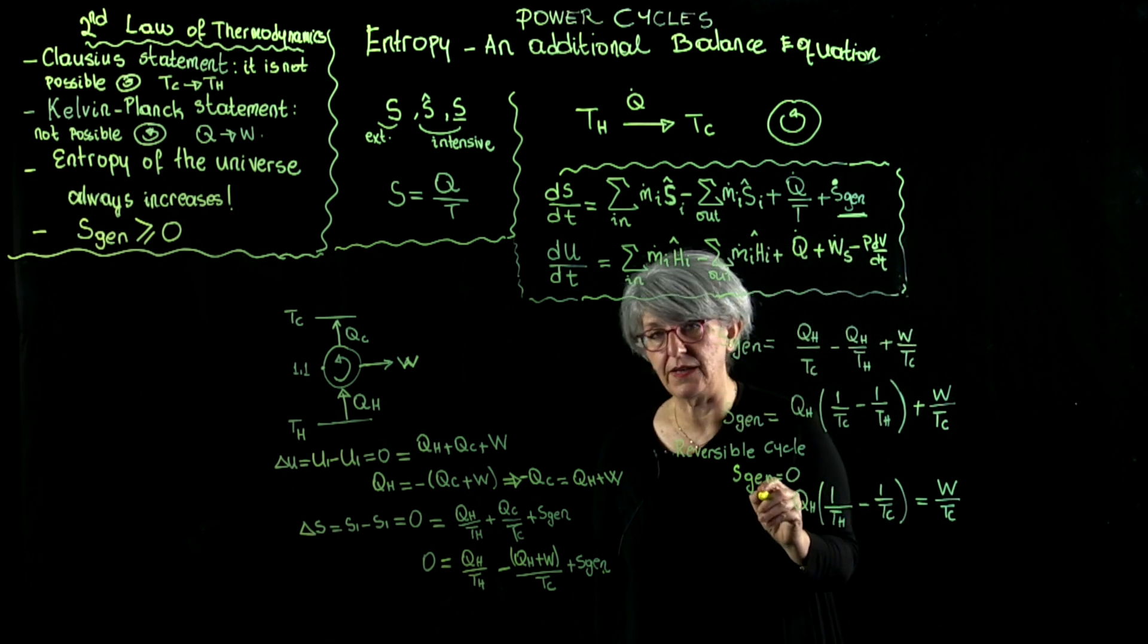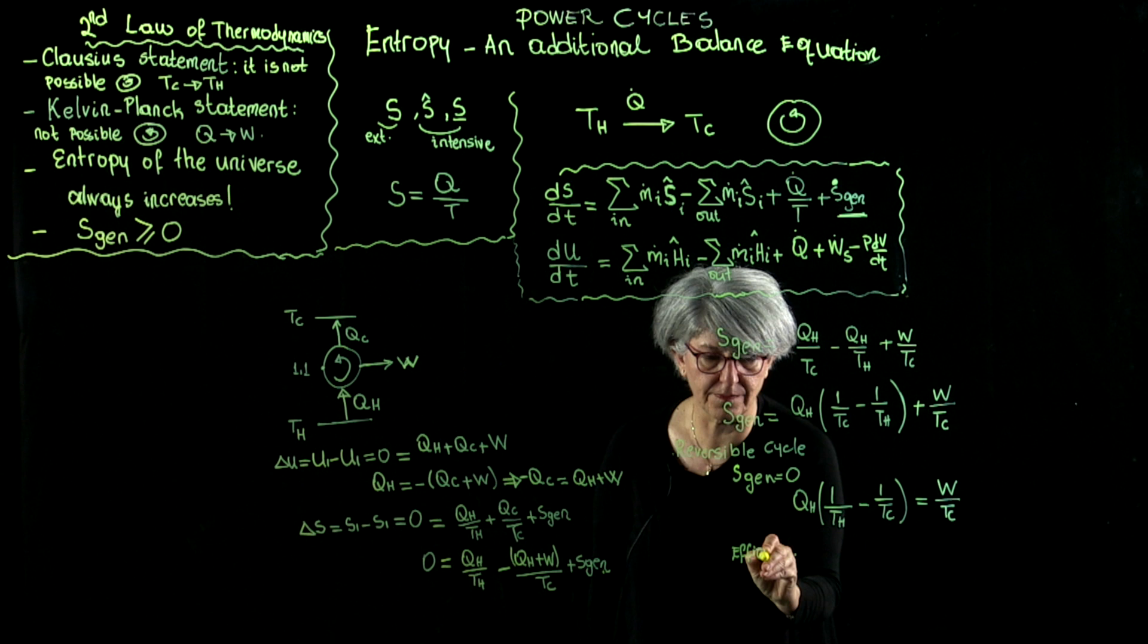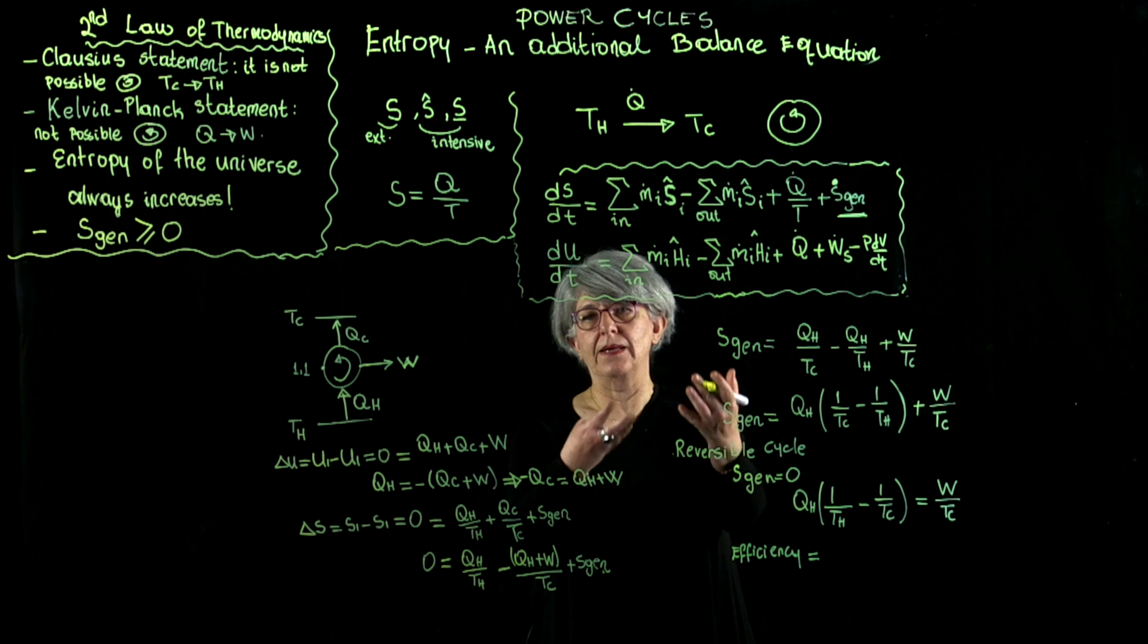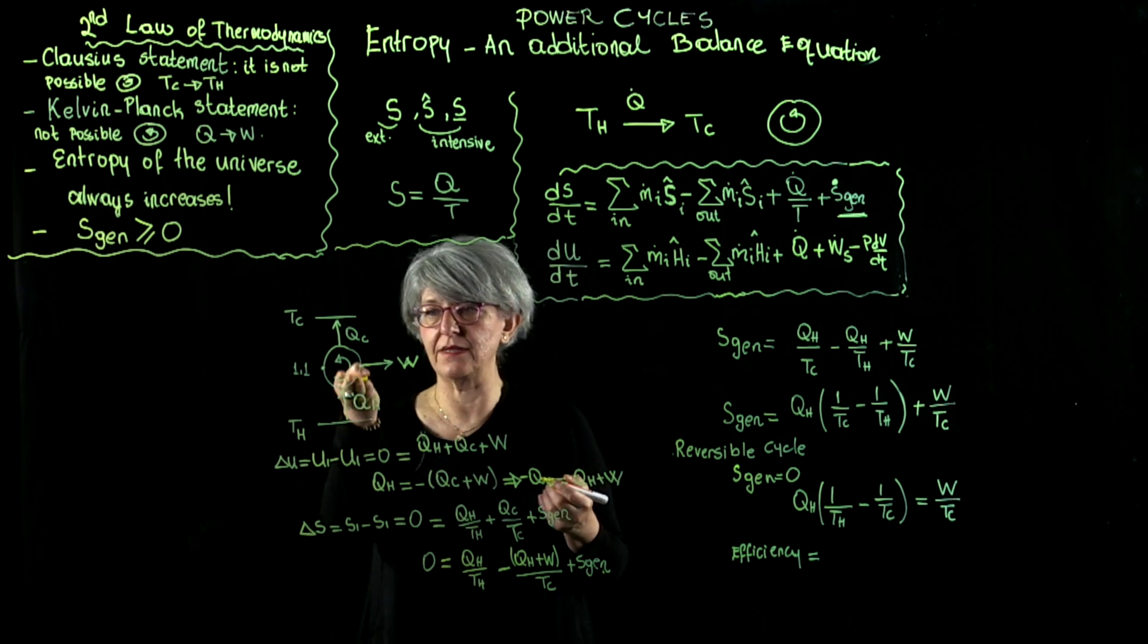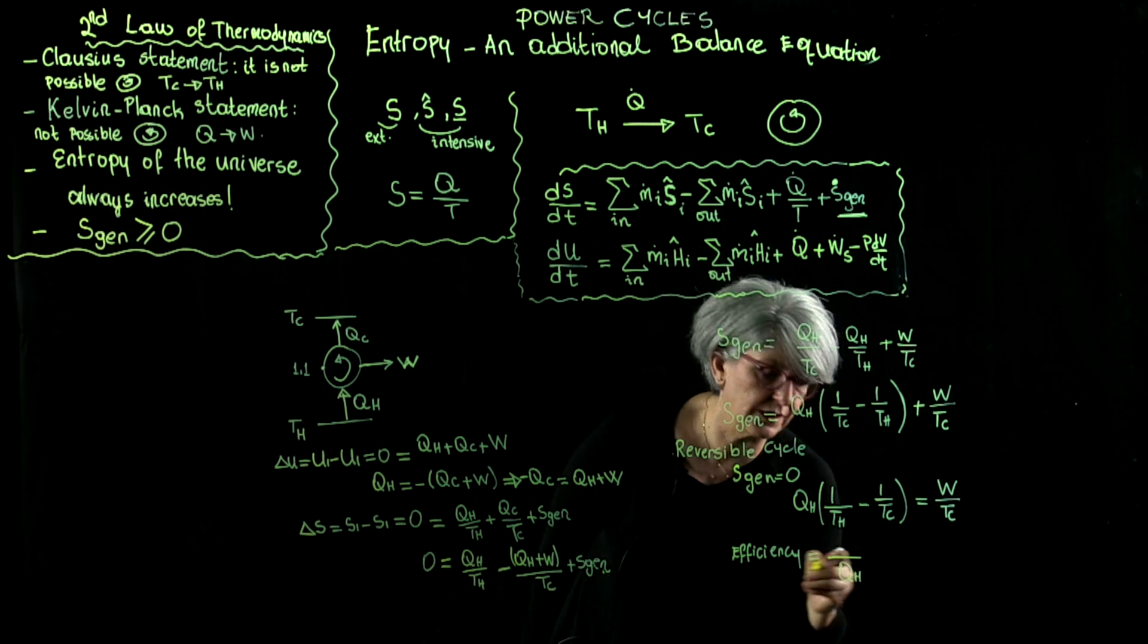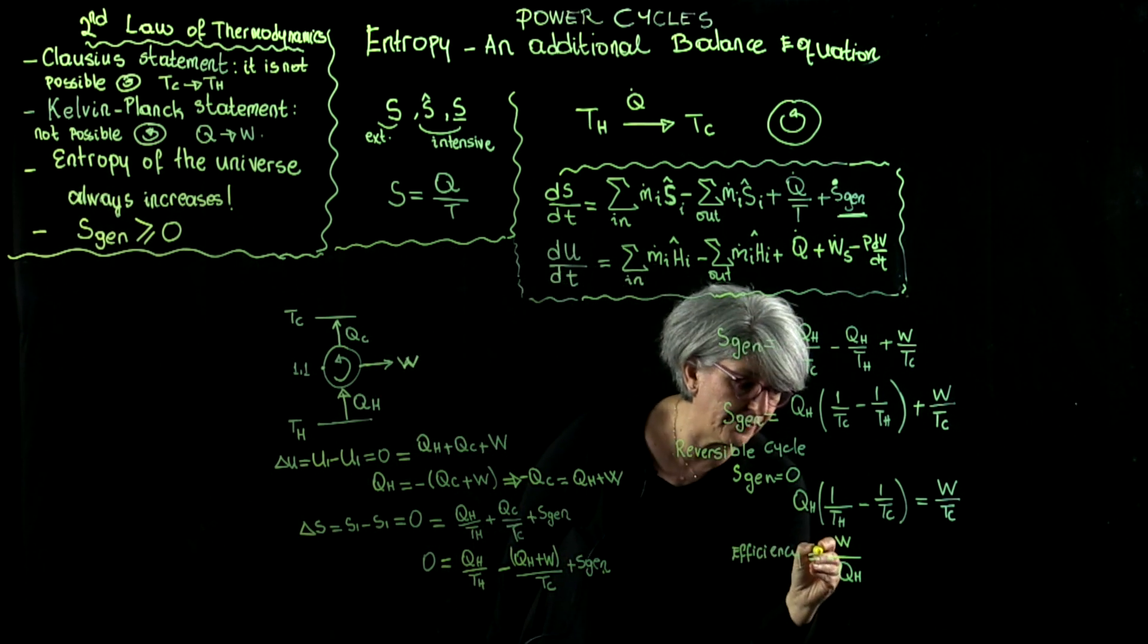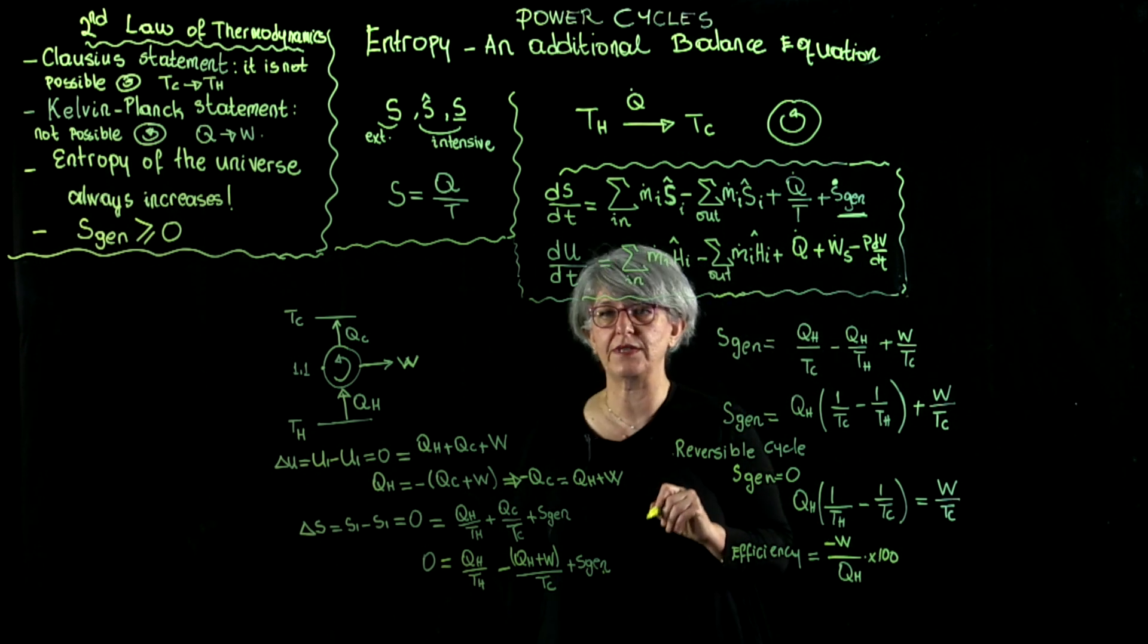I'm going to define a cycle efficiency. This term is equal to what I obtain as a result of what I have placed in. I have placed into this cycle q hot, so that should be in the denominator. What did I obtain? I obtained work. And of course, they are in opposing direction relative to the cycle. So I have to put a minus in front and multiply this by 100 to get the percent efficiency.